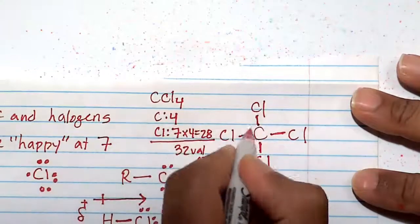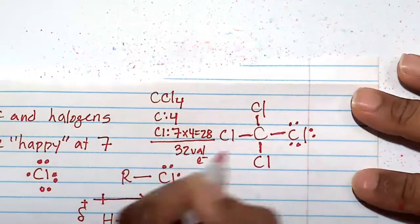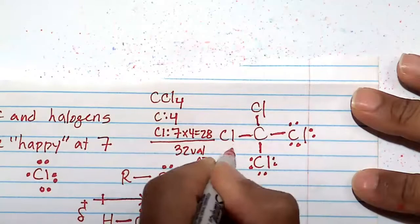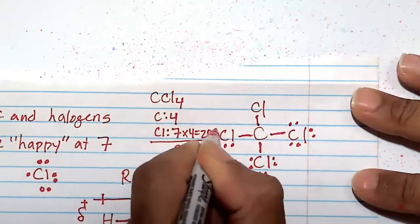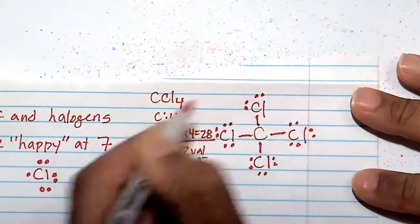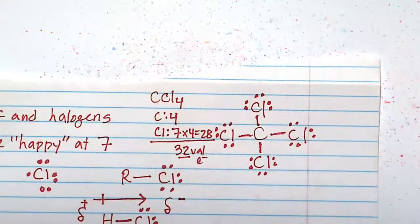So 1, 2, 3, 4, 5, 6, 7, 8, 9, 10, 11, 12, 13, 14, 15, 16, 17, 18, 19, 20, 21, 22, 23, 24, 25, 26, 27, 28, 29, 30. So I got my 32 valence electrons there.